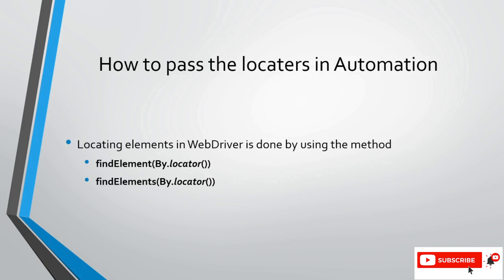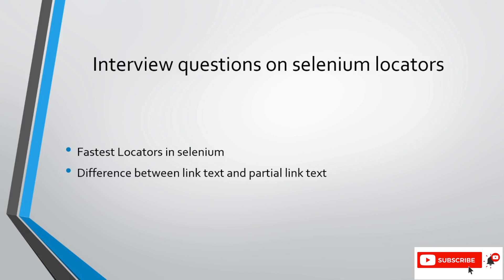These are the most used and required commands to identify any locator. One important thing to know is the By class, which is the most important in Selenium. Using the By class is how we specify which locator we're using — By.id, By.name, By.className, By.xpath. It tells Selenium what type of locator we are looking for.